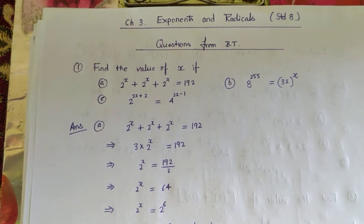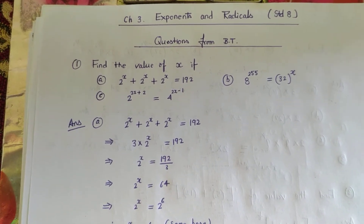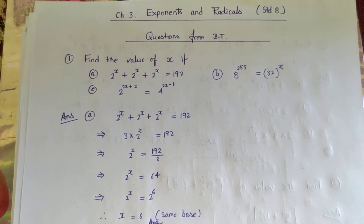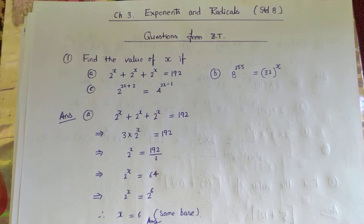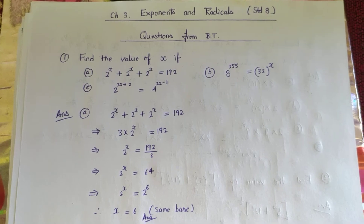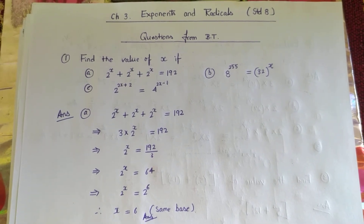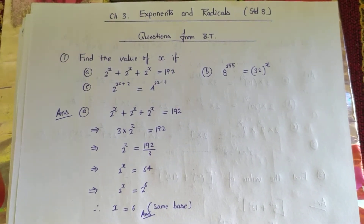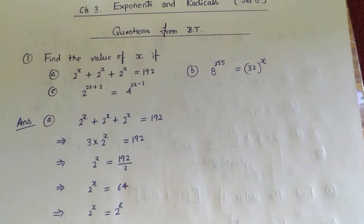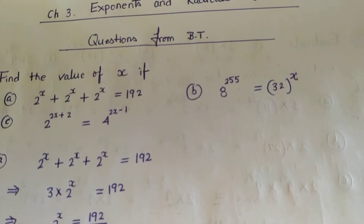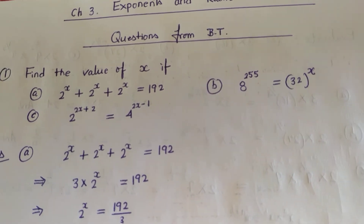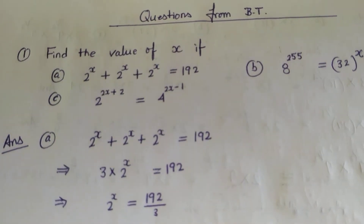We have some questions from Brain Teacher, Chapter 3: Exponents and Radicals, Standard 8. The first question is: find the value of x if 2 to the power x plus 2 to the power x plus 2 to the power x is equal to 192. The second question is 8 to the power 255 is equal to 32 to the power x. The third is 2 to the power 2x plus 2 is equal to 4 to the power 2x minus 1.